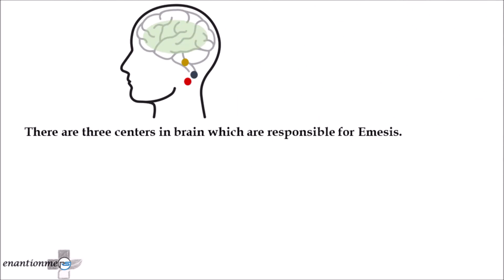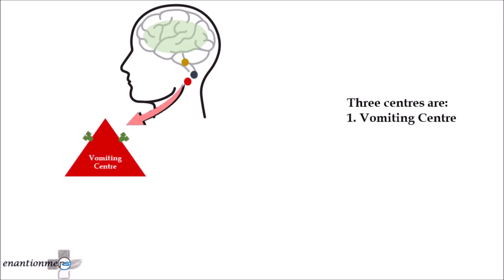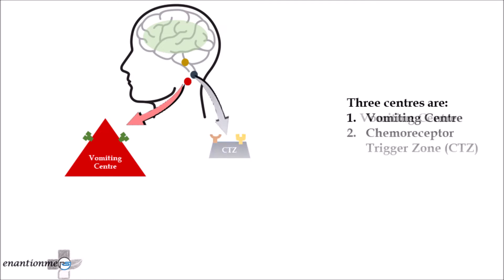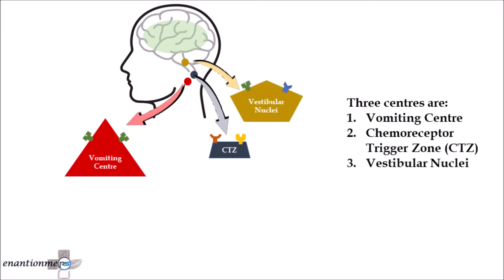There are three centers in the brain which are responsible for motion sickness. These three centers are: the vomiting center, represented in red color; the chemoreceptor trigger zone (CTZ), represented in dark blue color; and the vestibular nuclei, represented in brown color.